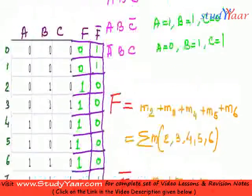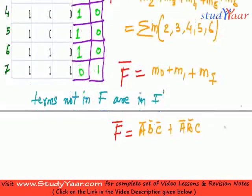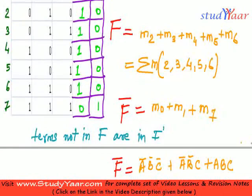And what is M7? M7 is A is equal to 1. B is equal to 1. C is equal to 1. So this is equal to A, B, C. So this is my F bar.